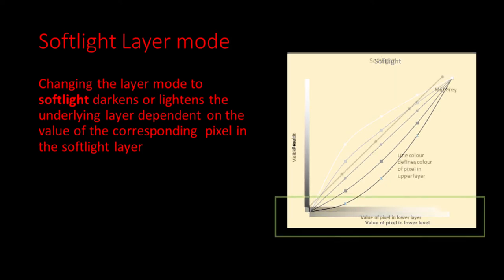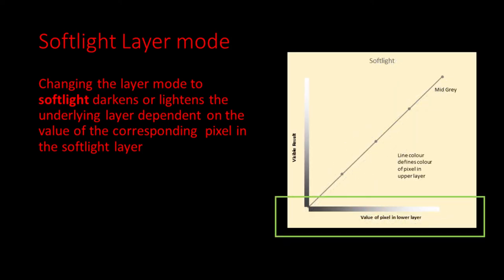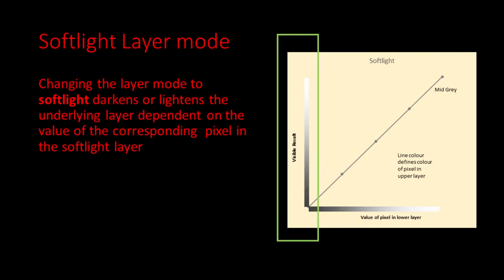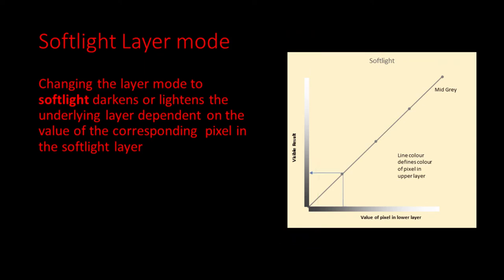First let's simplify the graph. The horizontal axis indicates the colour of the pixel in the lower layer, and the colour of the line indicates the colour of the corresponding pixel in the upper layer. Here I am only showing a line for mid-grey, which is the midpoint between black and white. The vertical axis represents the colour of the corresponding pixel when Soft Light is used. If we have a mid-grey pixel in the upper layer, the Soft Light mode has no effect on the final image — each colour in the lower layer translates to the same colour in the resultant image.